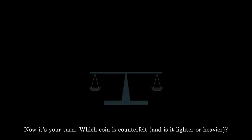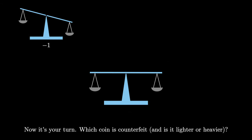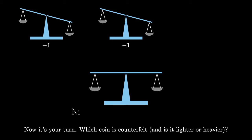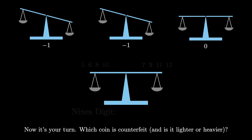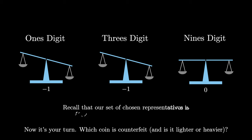Now it's your turn. Can you determine which coin is counterfeit and whether it's lighter or heavier, if the first two weighings both tip to the right and the final weighing stays perfectly balanced? Remember that our weighings move from least significant to most significant left to right, and recall that our set of chosen representatives only negated the numbers 7, 9, 11, and 12.